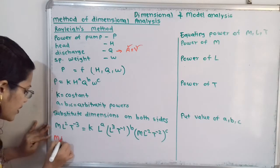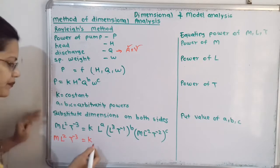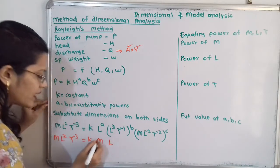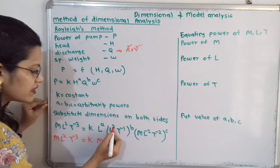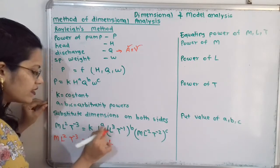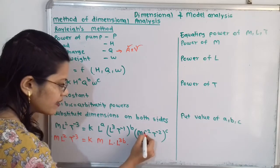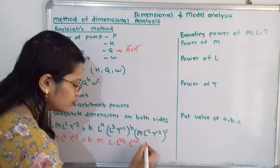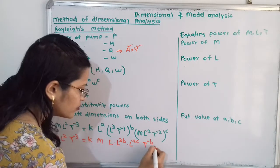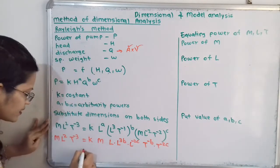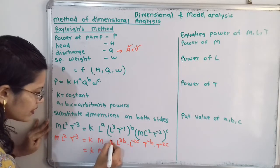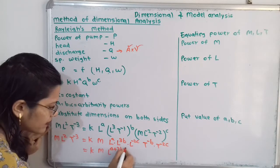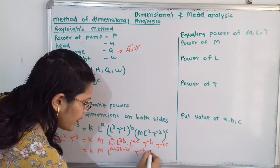Now we simplify. Writing out the right-hand side: M·L²·T⁻³ = K · M^C · L^(A + 3B − 2C) · T^(−B − 2C). We combine the exponents of L as A + 3B − 2C, and the exponents of T as −B − 2C.